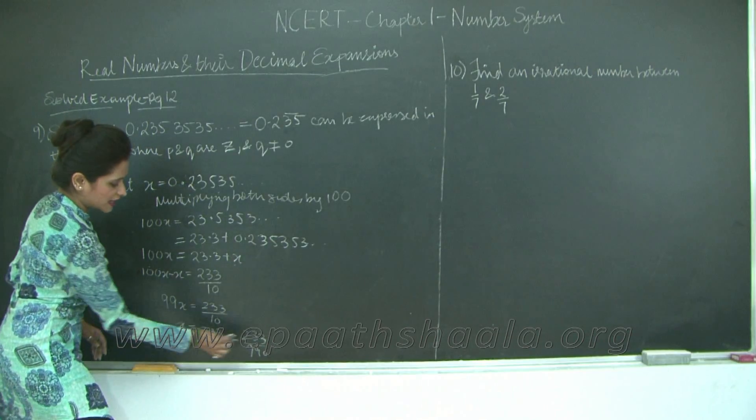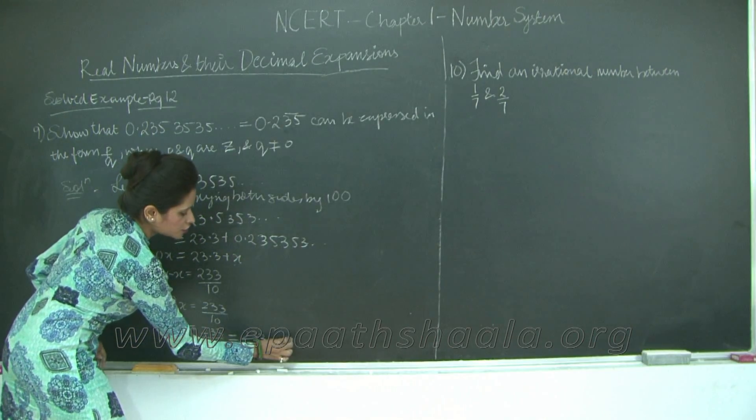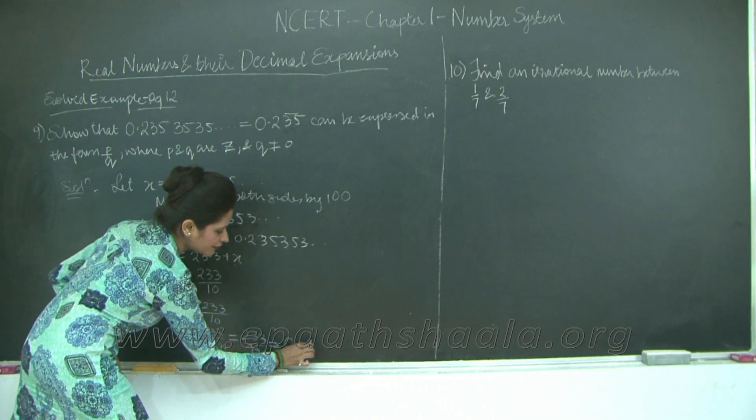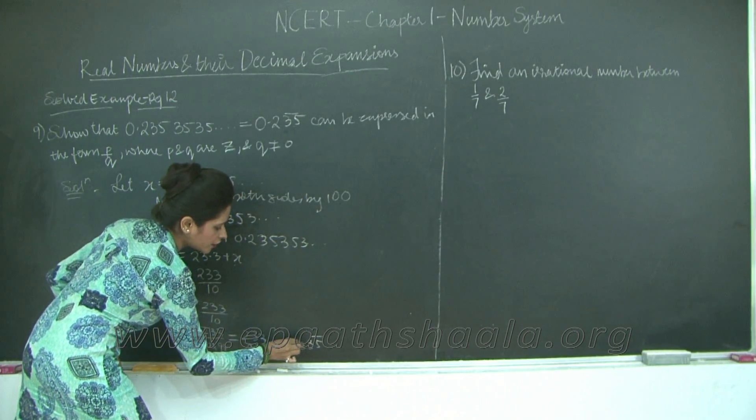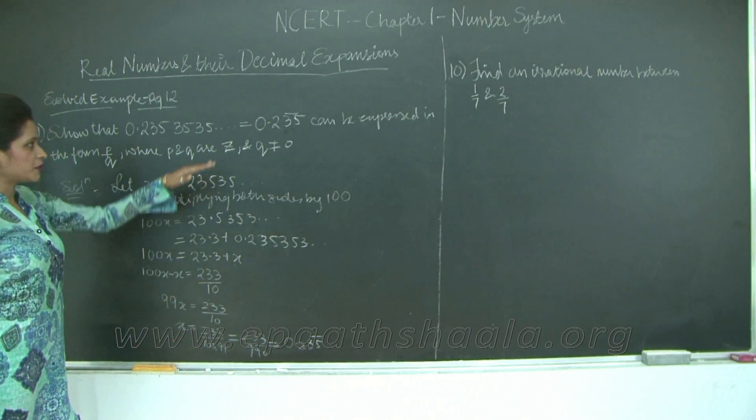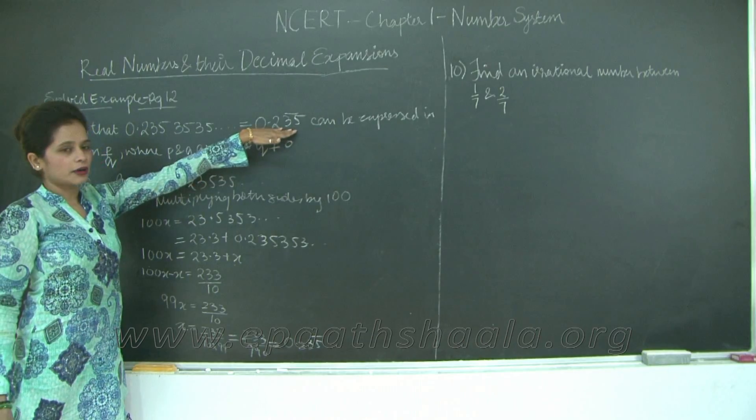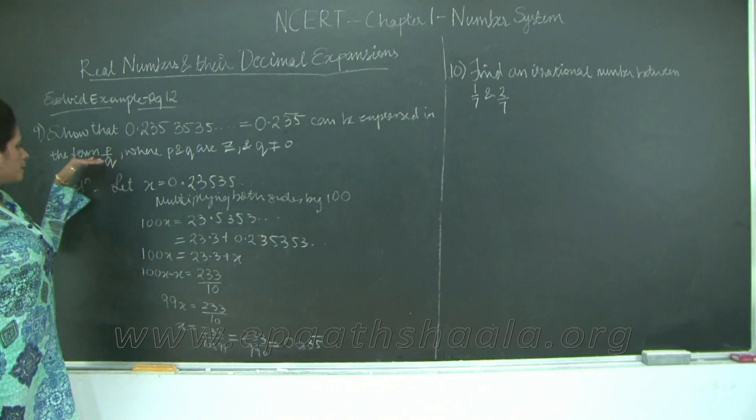x equals 233 upon 10 times 99, which can be further written as 233 upon 990. So this is my x, which equals 0.235 bar on 35. So I have represented this number, the rational number 0.235 bar on 35, in the form P upon Q.